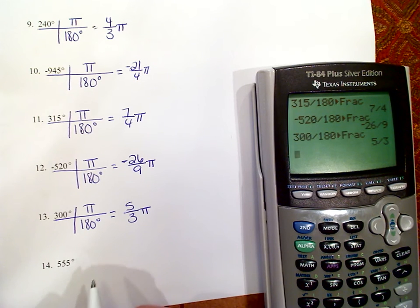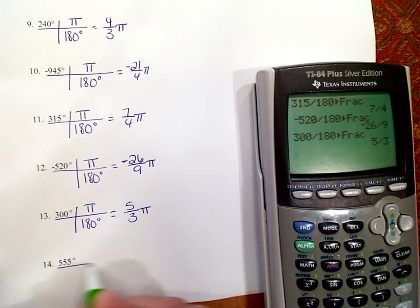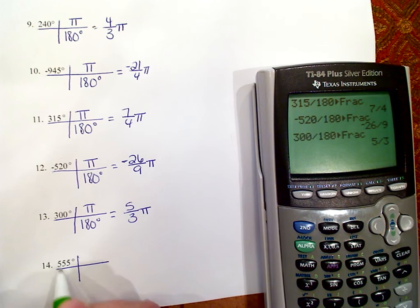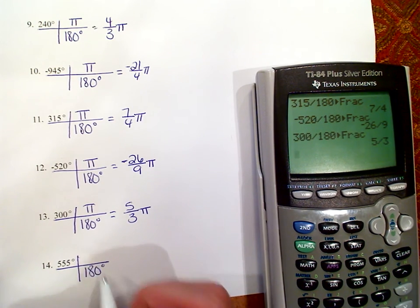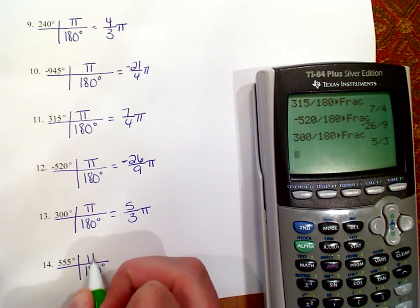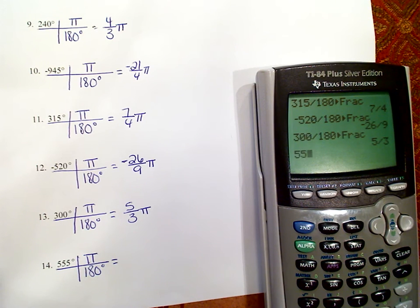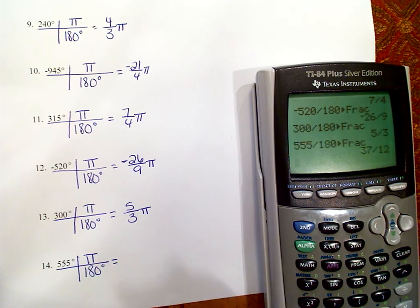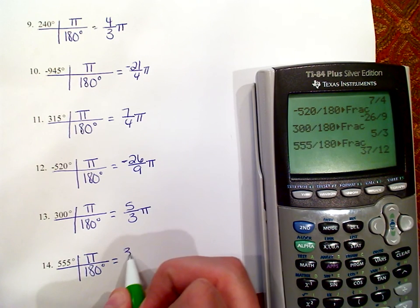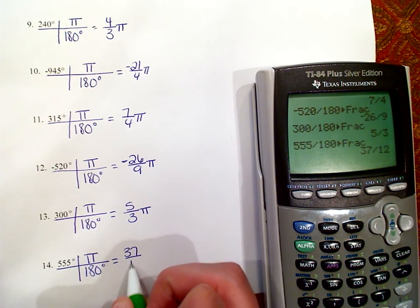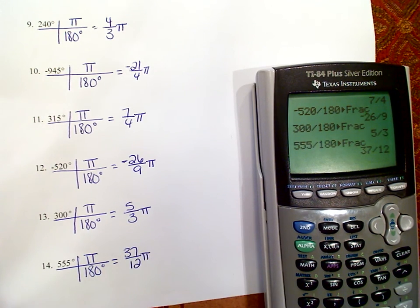The last one to convert from degrees to radians is 555 degrees. Put 180 degrees on the bottom and pi on top. 555 divided by 180, math, enter, enter — is 37 over 12 pi.